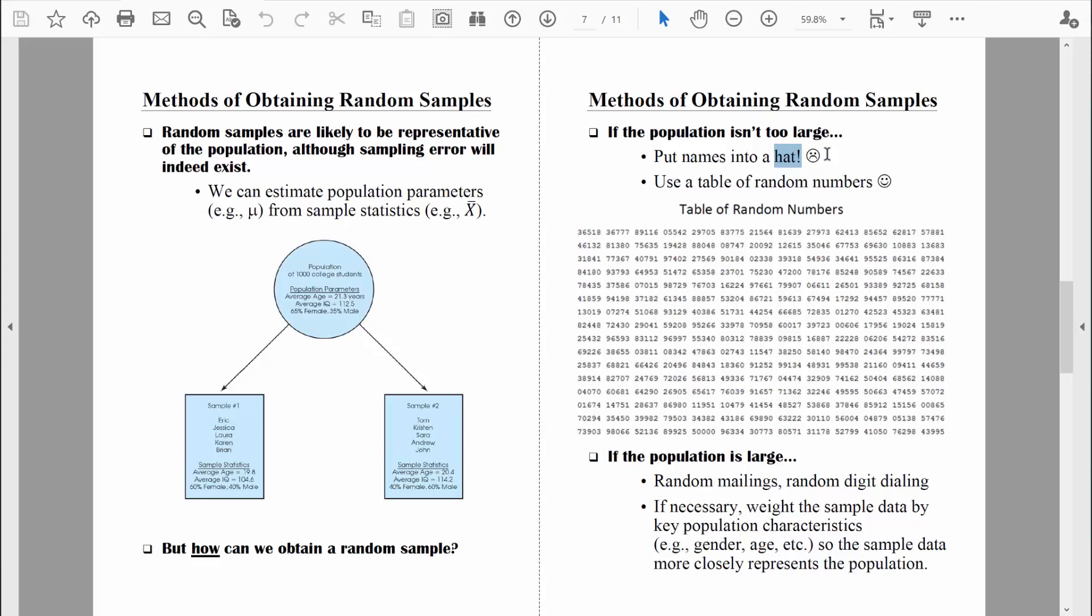Let's talk about a couple other methods that are much more commonly used nowadays. For example, we could use a table of random numbers. This is still relatively low tech, but it works out pretty well. You'll see in statistics books there's always some table of random numbers.